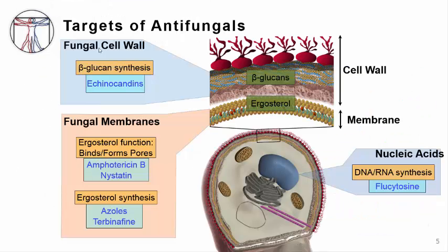There are only four major classes of antifungal agents used for invasive fungal infections, and they target three basic cellular processes. These are: number one, interfering with the production or function of ergosterol, one of the main lipids in the fungal cell membrane; two, inhibiting the production of components of the fungal cell wall, such as beta-glucan; and three, disrupting fungal nucleic acid synthesis.